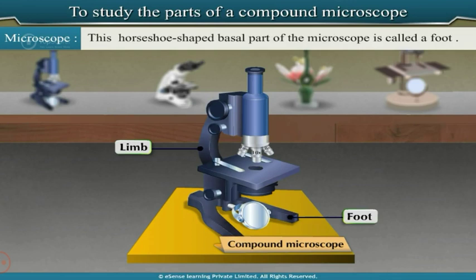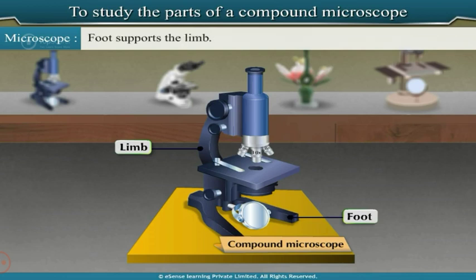This horseshoe-shaped basal part of the microscope is called a foot. The foot supports the limb, which bears a stage.